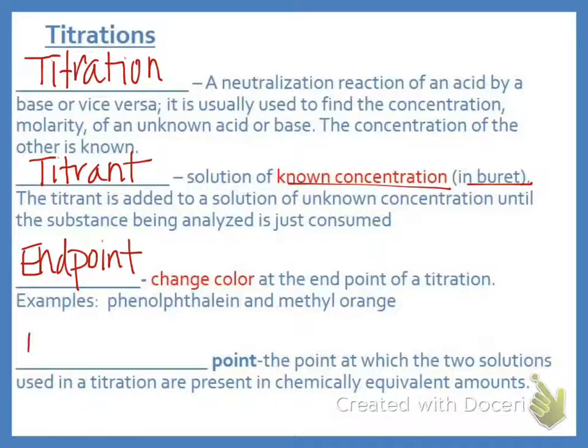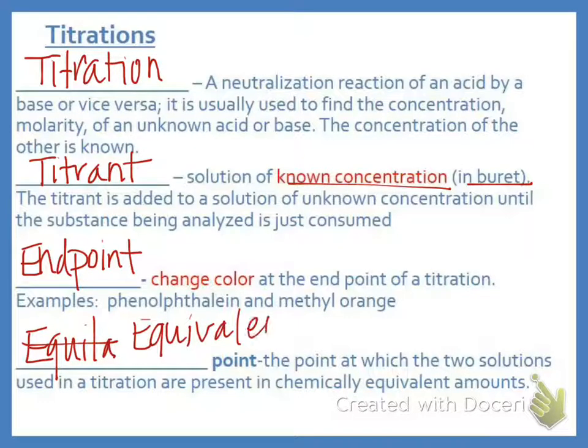The equivalence point is actually when the neutralization occurs, and that's when the actual chemical neutralization occurs, but we can't see it unless we happen to be doing that titration with the pH meter. And so the end point is literally one drop past that. But because one drop is only about 0.05 milliliters, it's close enough for our calculations. So just make sure you understand that there's a difference between the actual equivalence point and the end point. The end point is the visual representation of that equivalence point.